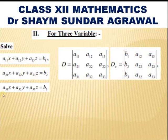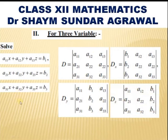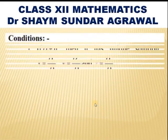Similarly, Dx is formed by replacing all the coefficients of x with the constant terms b₁, b₂, b₃. Dy is formed by replacing the coefficients of y with b₁, b₂, b₃. And Dz is formed by replacing all the coefficients of z with b₁, b₂, b₃. So first we calculate D, Dx, Dy, and Dz.